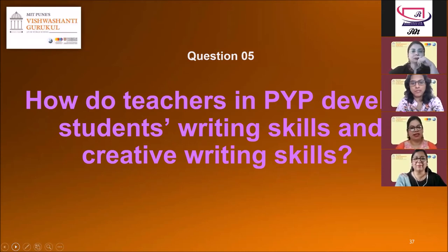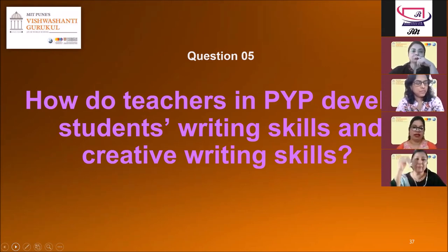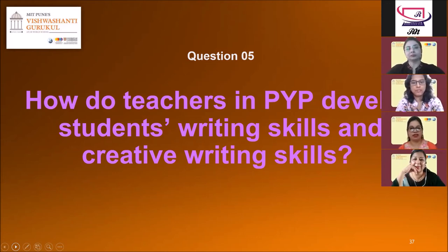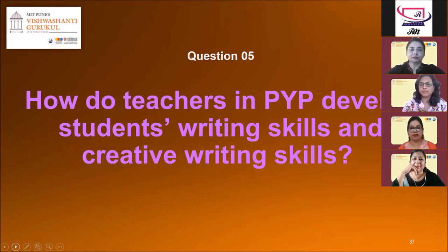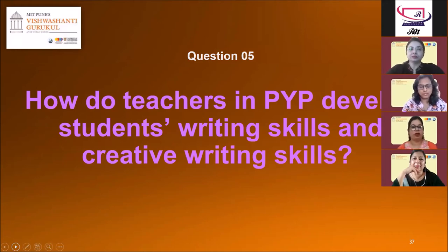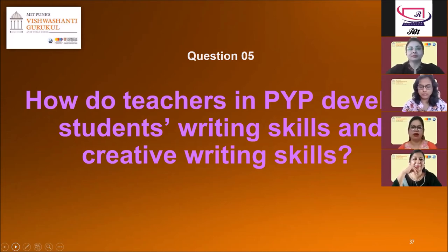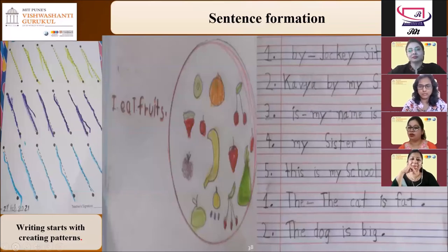Why are writing skills and creative writing skills important for students? Writing helps to improve intellectual skills. Creative writing also develops creative thoughts, using their imaginations, suggesting alternatives, broadening their thought process and problem-solving abilities. In Gurukul, we introduce the writing process which involves various stages: pre-writing, crafting, revising, editing, and publishing. As we introduce students to different text types, we discuss the purpose of writing, text structure, and language features.